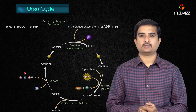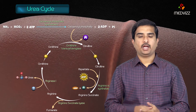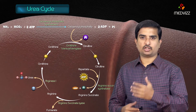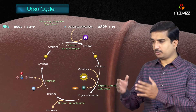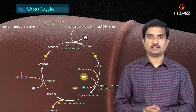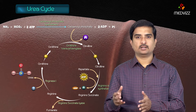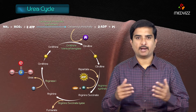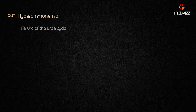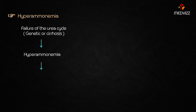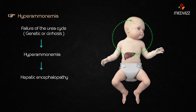Urea cycle. The urea cycle has a series of reactions that occur in the liver in order to convert the toxic ammonia — the product of amino acid catabolism — to urea, which is the molecule with two amine groups. Failure of the urea cycle, which is mainly genetic or due to cirrhosis, leads to hyperammonemia, which leads to hepatic encephalopathy.